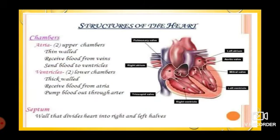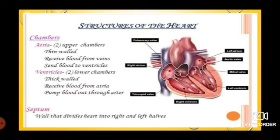Structure of the heart — here is the detailed study. Chambers are total four. There are atria, also called auricles, which are the two upper chambers. And ventricles are the two lower chambers; they are thick-walled. The atrium is thin-walled and receives blood, while ventricles pump blood out through the arteries. The septum is the wall that divides the heart into right and left halves.